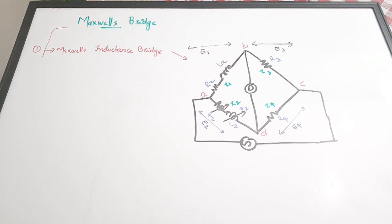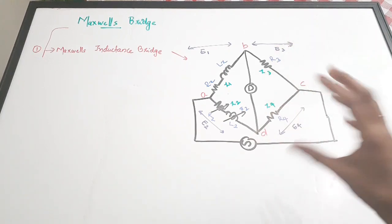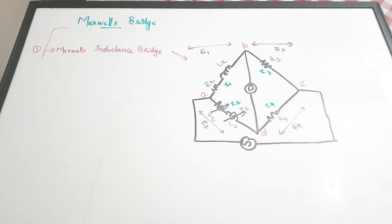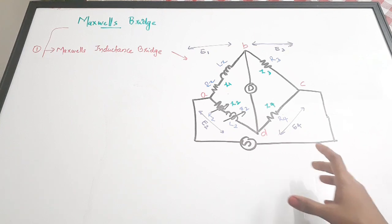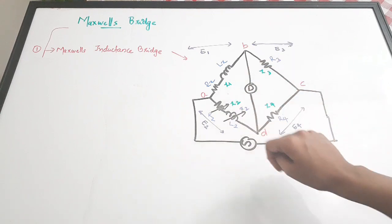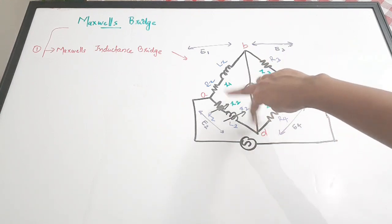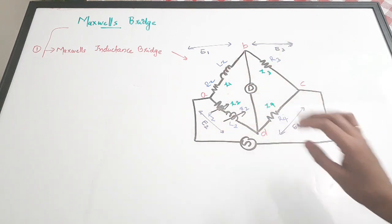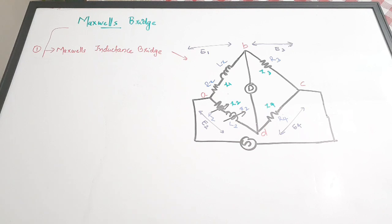This is called Maxwell's inductance capacitance bridge. The figure looks similar to a Wheatstone bridge because Maxwell's bridge is a modified version of the Wheatstone bridge — they modified the structure of the Wheatstone bridge and added inductors to make it Maxwell's bridge, used to measure unknown inductance. There are four arms: AB, BC, CD, and DA, just like the Wheatstone bridge.